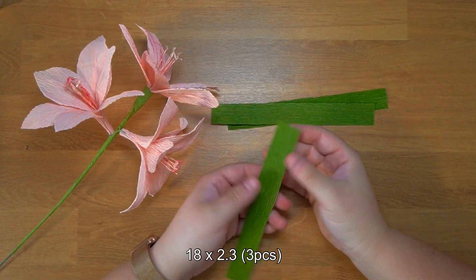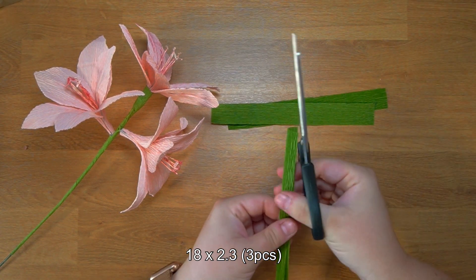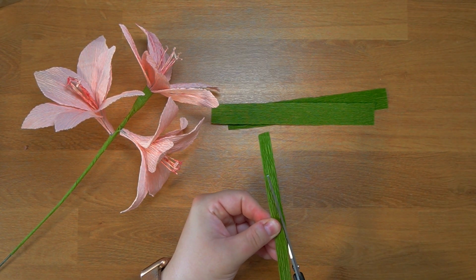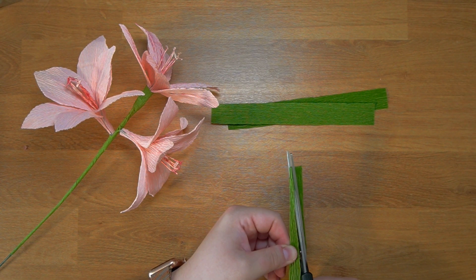Once you finish all three flowers and add them to the stem of the amaryllis, you can start working on the leaves.